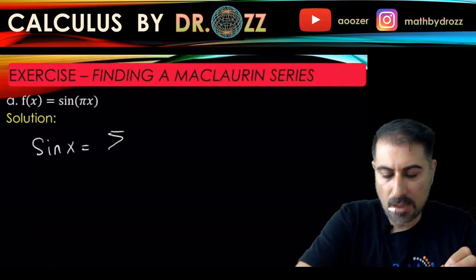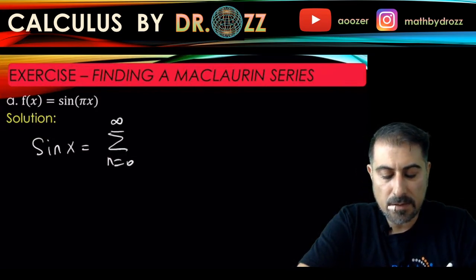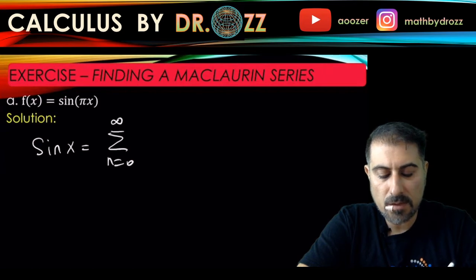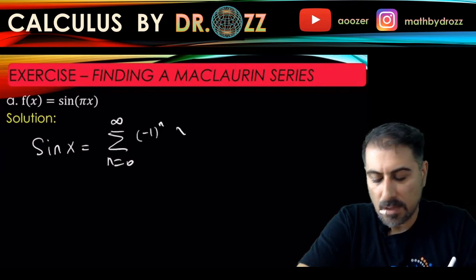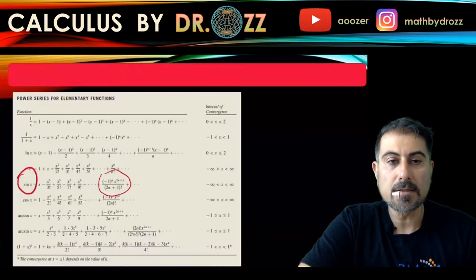Sine x equals the sum from 0 to infinity minus 1 to the n x to the 2n plus 1, 2n plus 1 factorial. Just to be on the safe side, I'm going to go ahead and check that again. Okay, that's good.